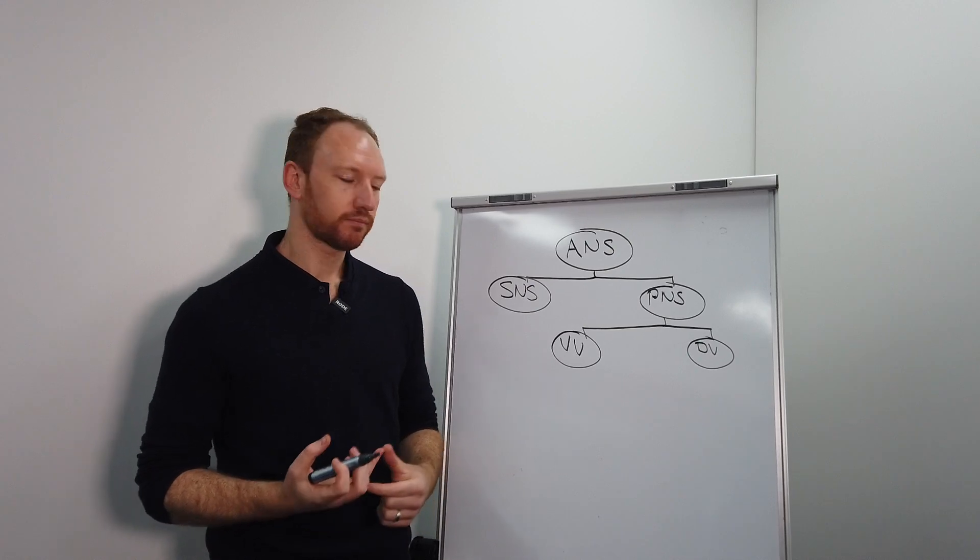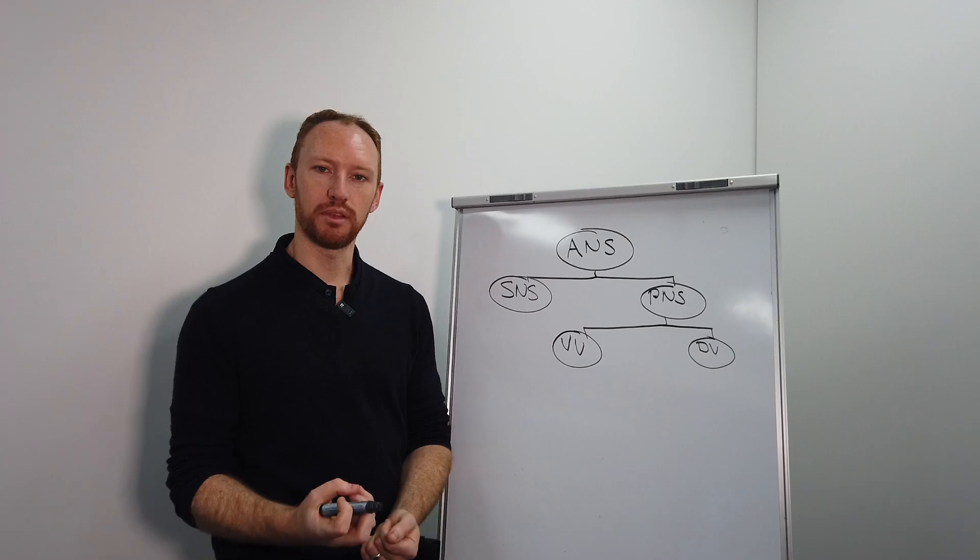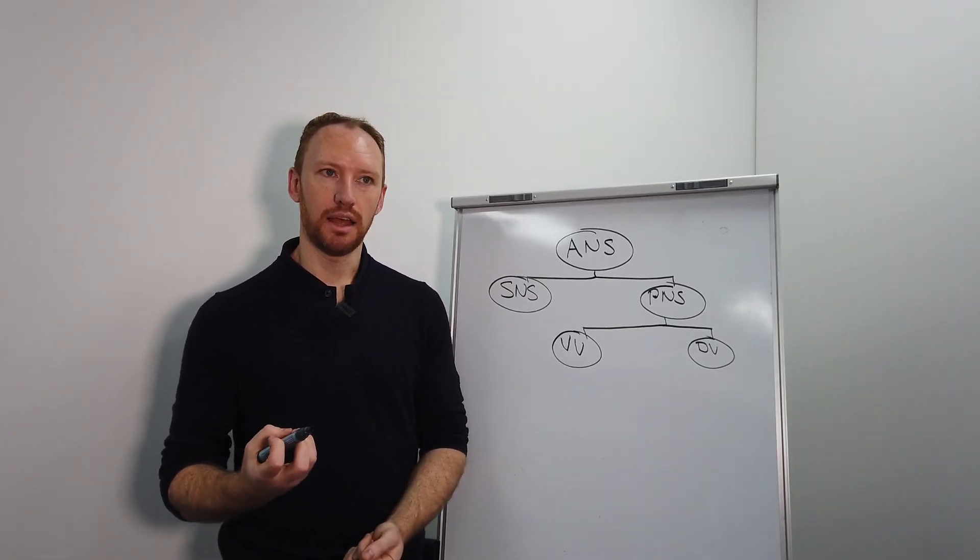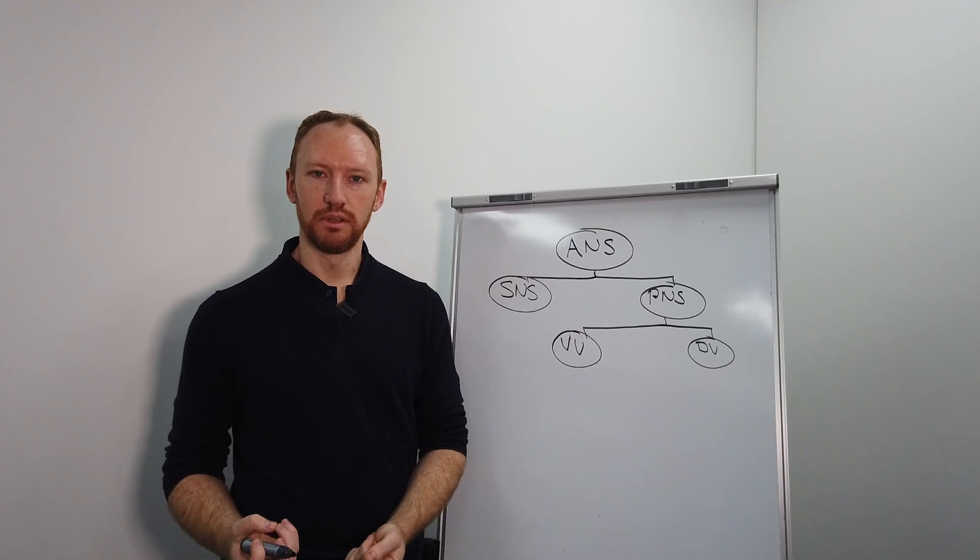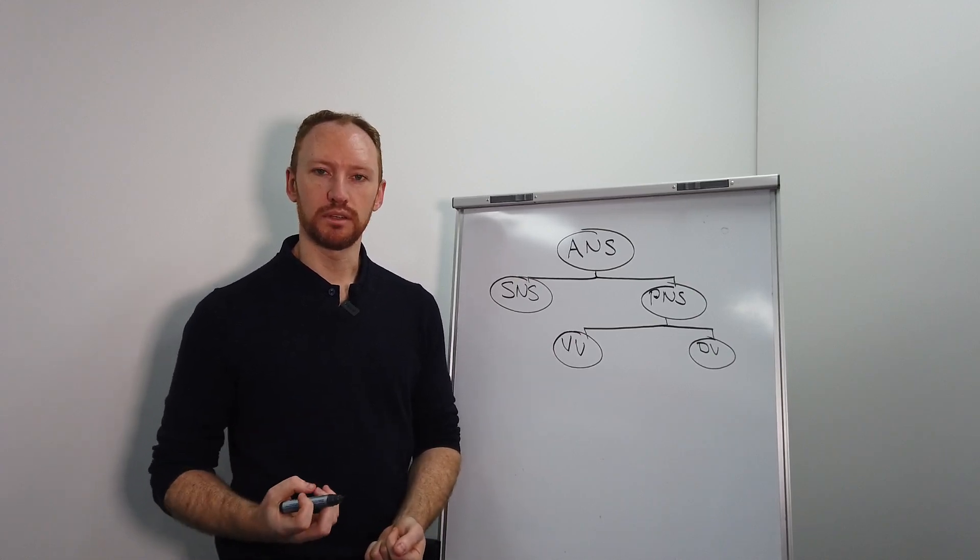But we've got this other branch which is also part of that parasympathetic nervous system called the dorsal vagus, and that is a shutdown response.